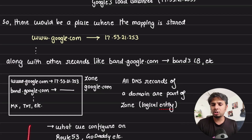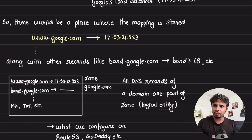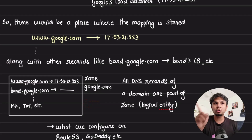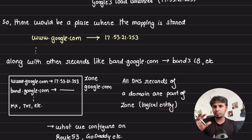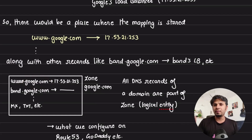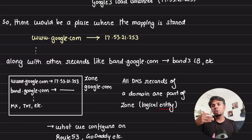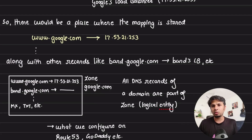A DNS zone is specific to google.com and stores mappings like: www.google.com → 17.53.21.253, bar.google.com → some load balancer CNAME, MX records, TXT records, and so on. If you use AWS, in Route 53 what you configure is a hosted zone — a logical grouping of all the domains, subdomains, and DNS records for a particular domain.